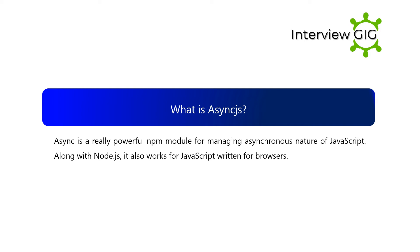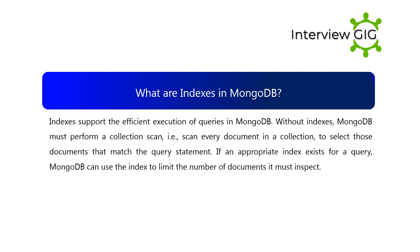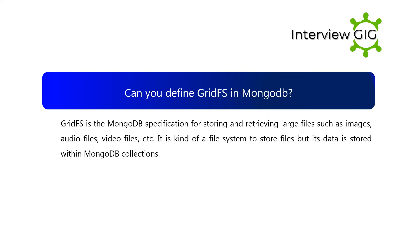What is async? Async is a powerful npm module for managing the asynchronous nature of JavaScript along with Node.js; it also works for JavaScript written for browsers. What are indexes in MongoDB? Indexes support the efficient execution of queries in MongoDB. Without indexes, MongoDB must perform a collection scan — scanning every document in a collection to select those matching the query. If an appropriate index exists, MongoDB can use it to limit the number of documents it must inspect.